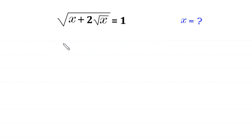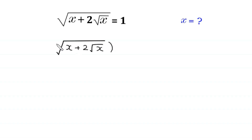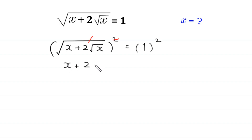Let's start by taking the square of both sides. The square cancels out with the square root on the left side, leaving x plus 2 times square root of x is equal to 1 squared, which is 1. Now we move x to the right side.